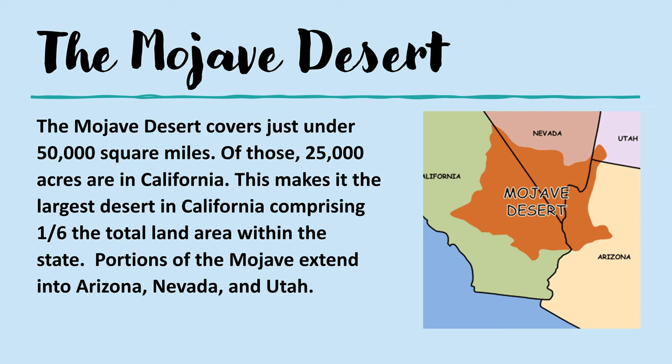The Mojave is also host to a wide range of animal species who are well adapted to desert living. The desert tortoise, bighorn sheep, bobcats, rattlesnake, and a whole host of other species call this desert home. Many of the animals are nocturnal, which is why people tend to think of the desert as uninhabited.